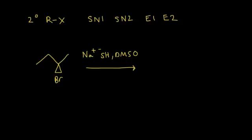Once you look at the structure of your alkyl halide, you then focus on your nucleophile. Here the nucleophile is the hydrogen sulfide anion — the negatively charged sulfur. We classify it as a strong nucleophile, which is a clue that this is an SN2 reaction, since SN2 mechanisms require strong nucleophiles.